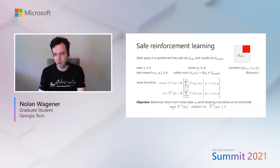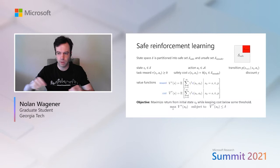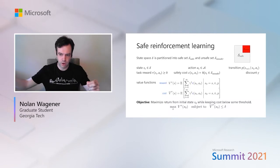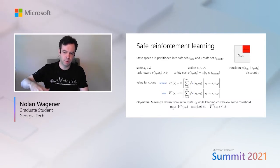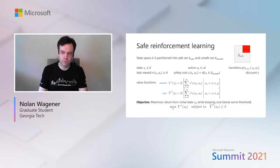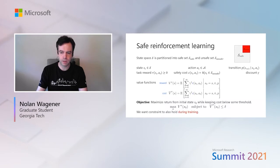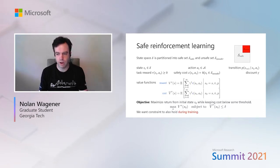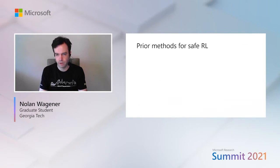The safe RL objective is to maximize the return from the initial state while having the associated cost be below some threshold. One interpretation of this objective is that the safety constraint only applies to the optimized policy. However, for our setting, we also desire for this constraint to hold throughout training.